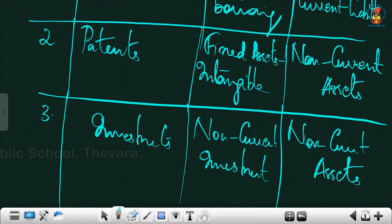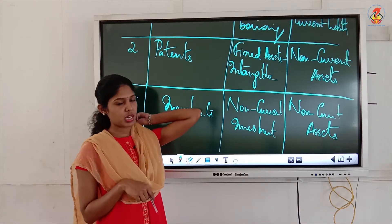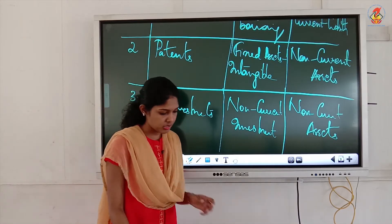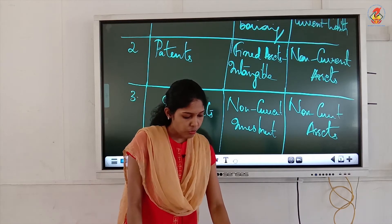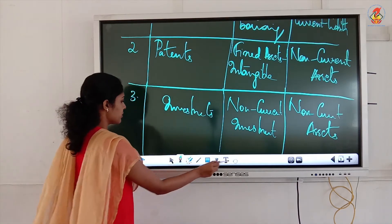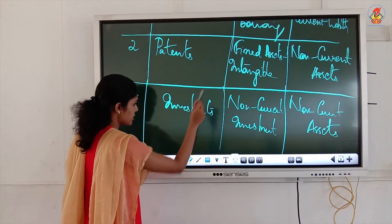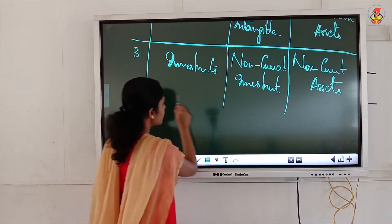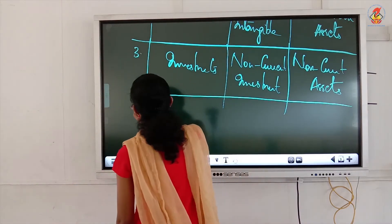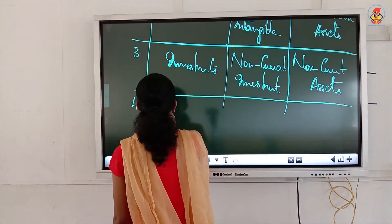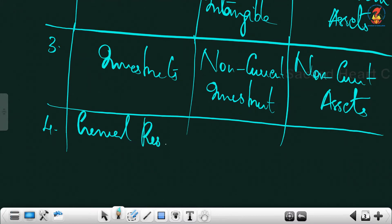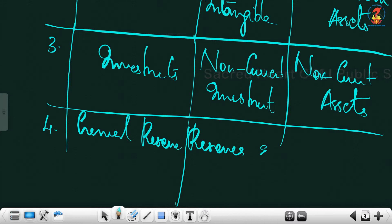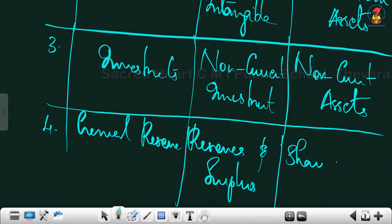If investments are specified as short-term, then consider them under current assets. Fourth one: general reserve. Since it is specified as a reserve, the subhead is reserves and surplus and the major head is shareholders' fund.